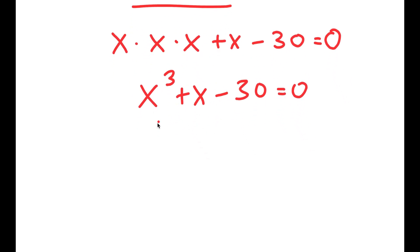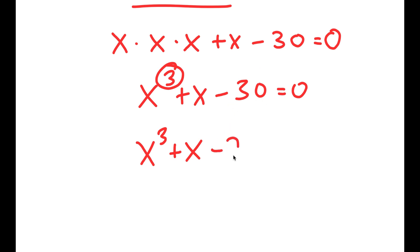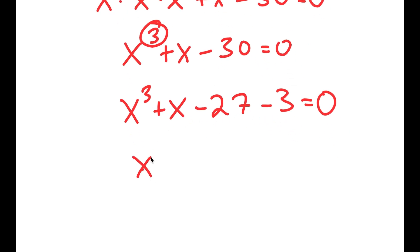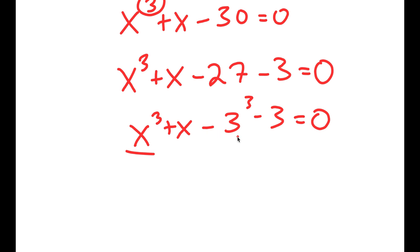A lot of people would think this is a quadratic equation, but this is a power of 3, not a power of 2, meaning we can't use the quadratic formula to solve this equation, or we can't simply use the normal method of factoring. So to actually solve this, what I'm going to do is rewrite negative 30 as negative 27 minus 3. The reason I did this is because 27 is the same thing as 3 to the power of 3. Notice how we have something to the power of 3 plus that same number, and another something to the power of 3 minus that same number.